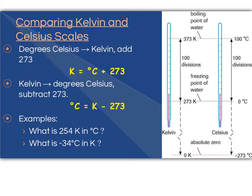If we want to compare and convert from degrees Celsius to Kelvin, what you are going to do is you are going to add 273. In order to get from Kelvin to degrees Celsius, you are going to have to take Kelvin and subtract 273.